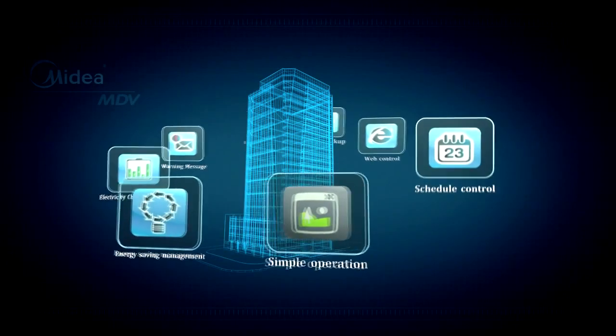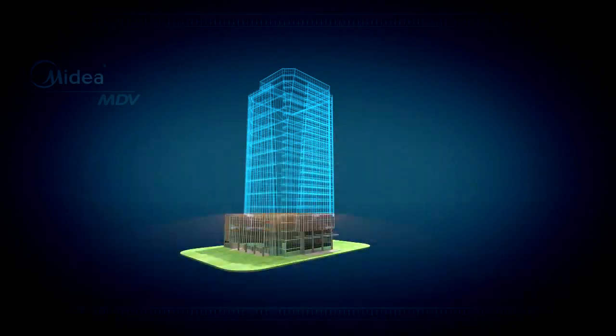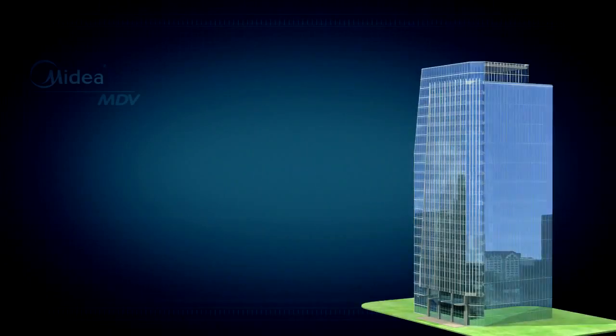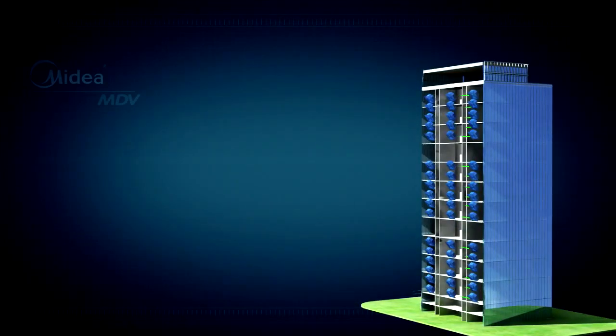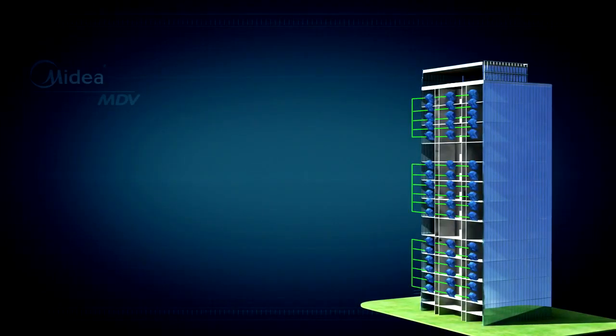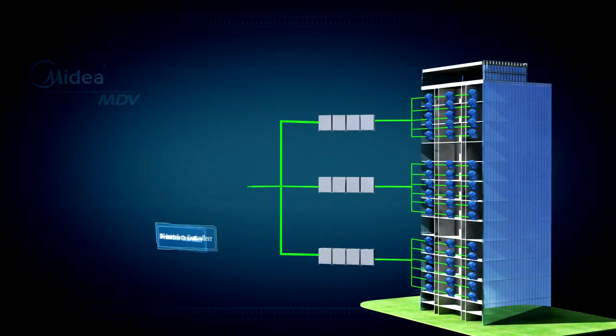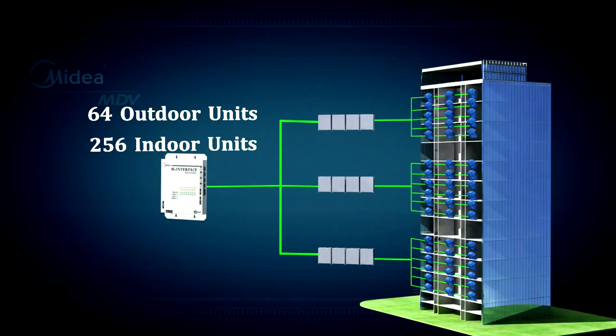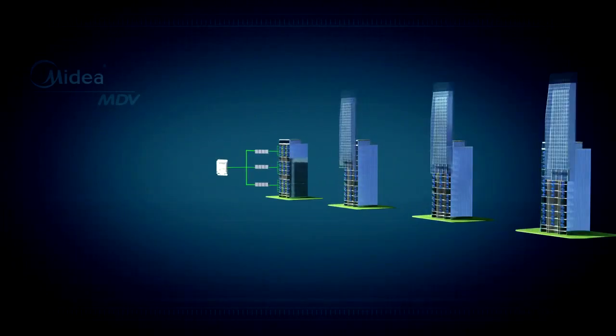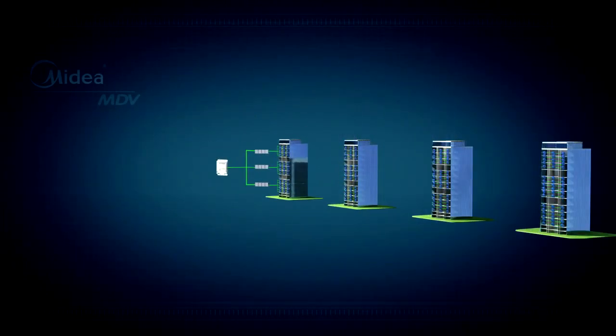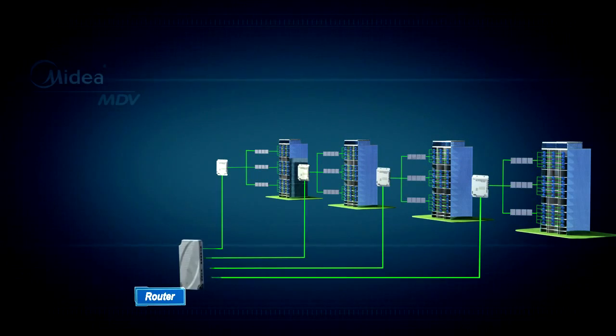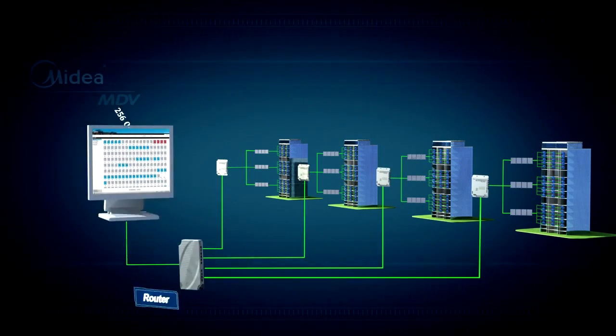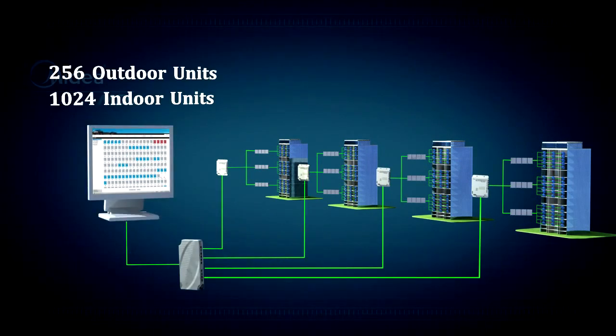Up to maximum 16 refrigerant systems can be connected to 1M interface, maximum 64 ODUs, 256 IDUs. Up to maximum 4M interfaces can be connected to 1PC through router, hub or LAN switch. Hence, maximum 1024 IDUs possible to be controlled by 1PC through IMM software.